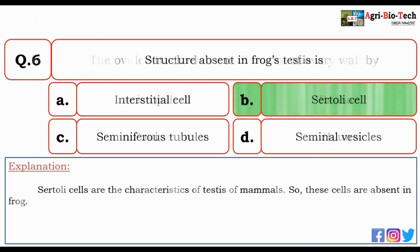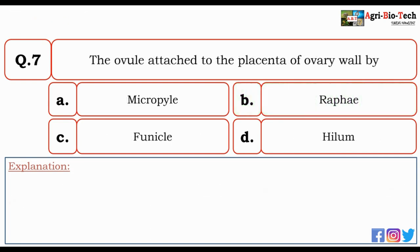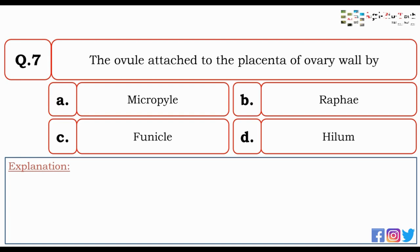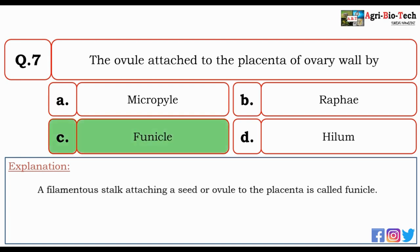Next question: the ovule is attached to the placenta of the ovary wall by — micropyle, raphae, funicle, or hylum? The correct option is C — funicle. A filamentous stalk attaching a seed or ovule to the placenta is called funicle.